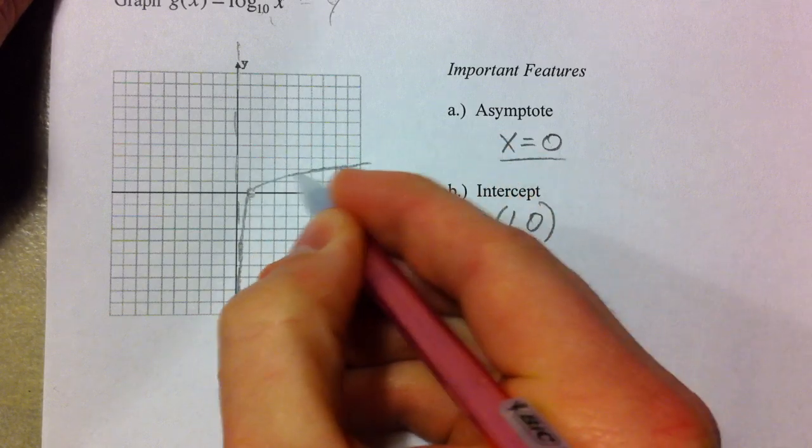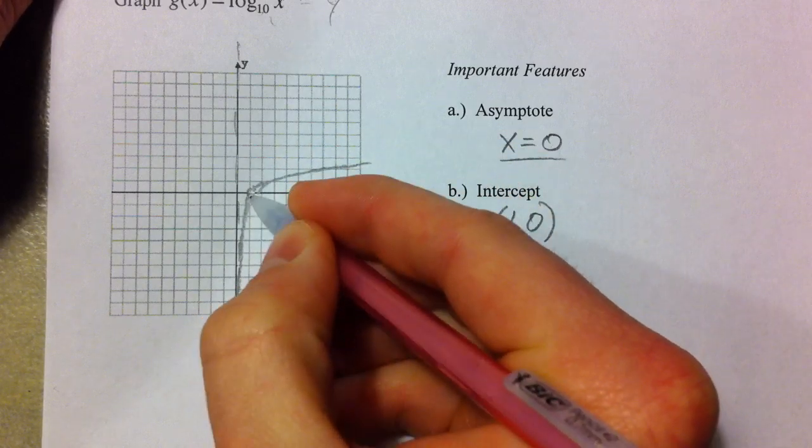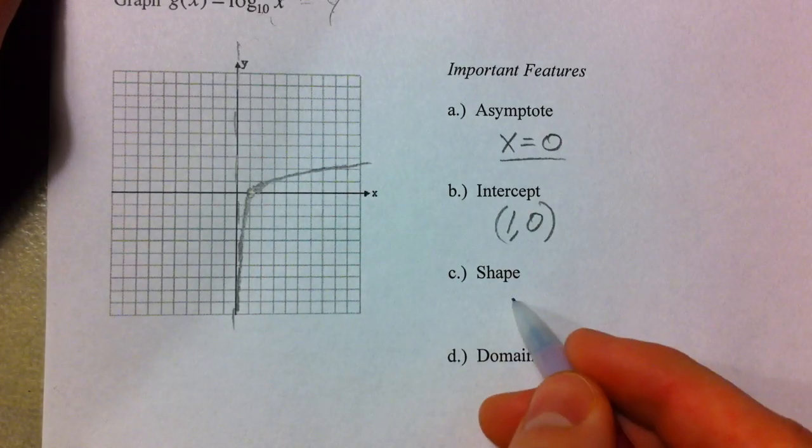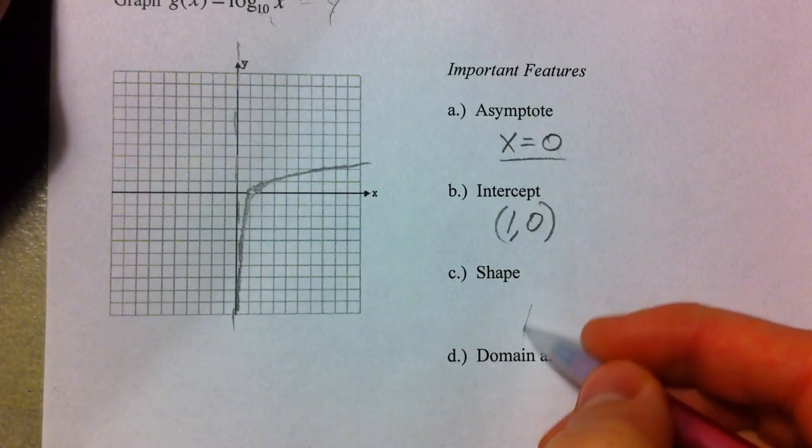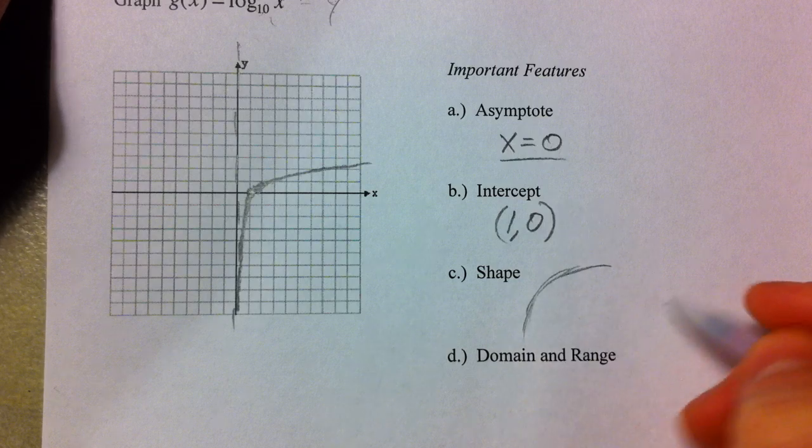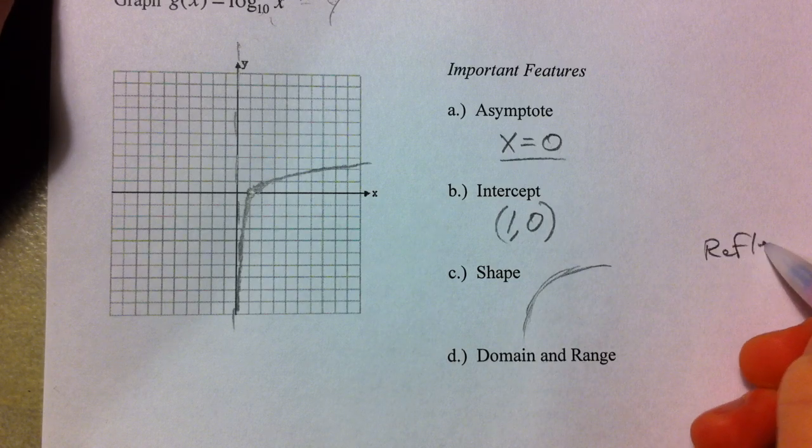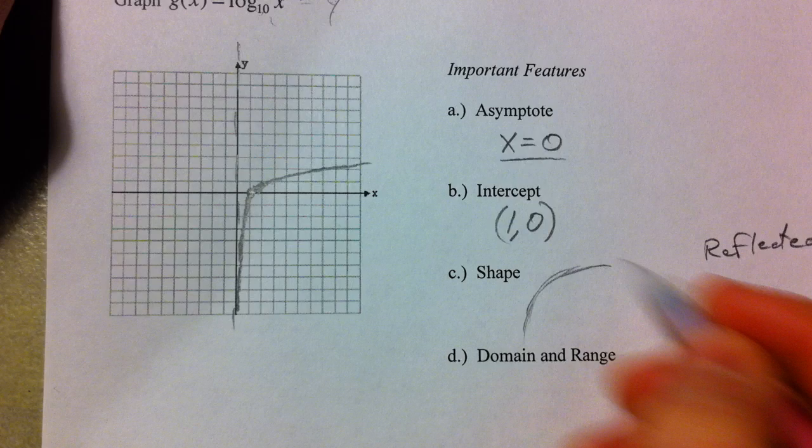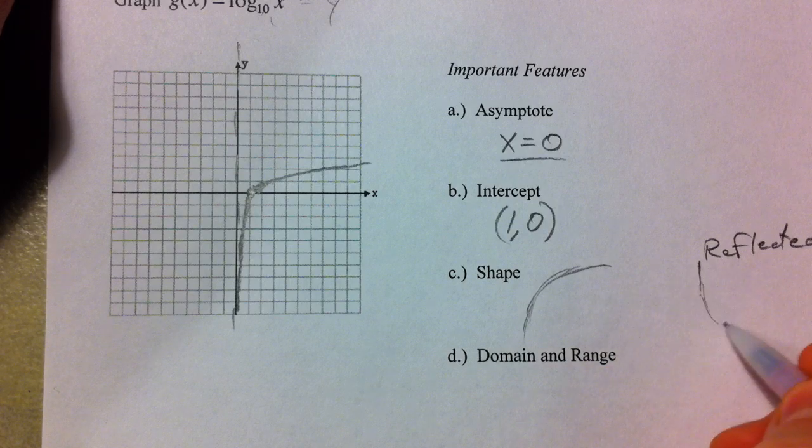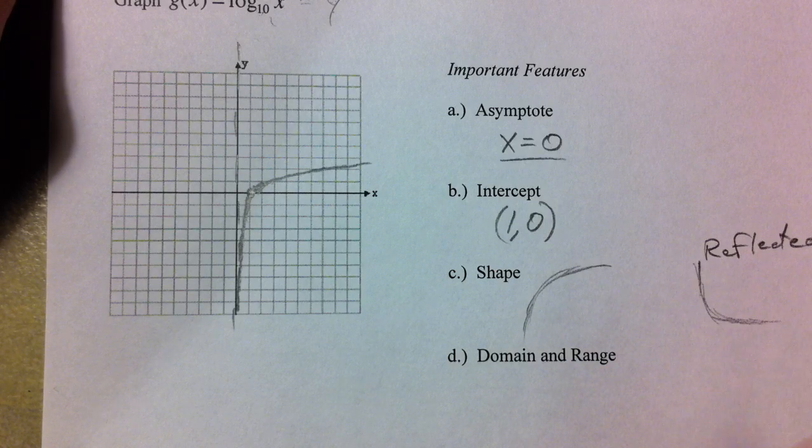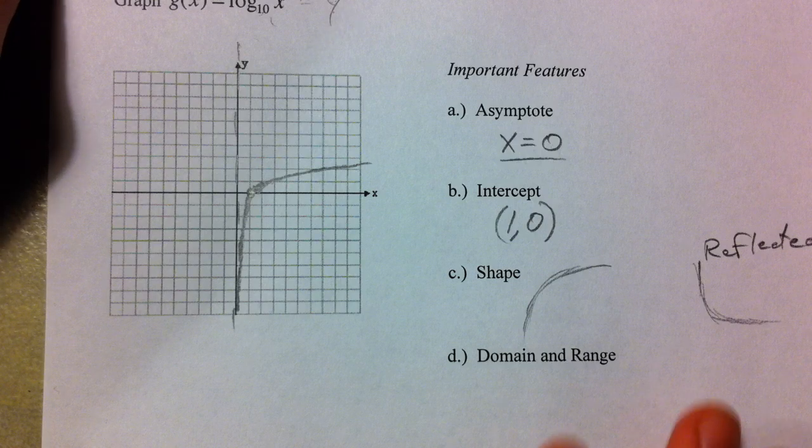And so we've got the shape down, it's going to look like this. Or if it's negative, reflected, it's going to come down from the top and then scroll over.